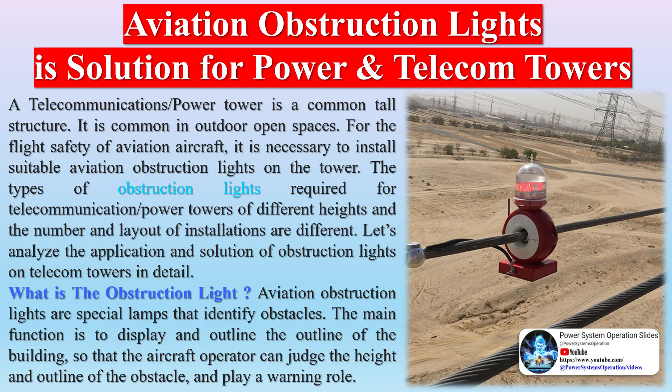Aviation lamps are high-intensity lights used to indicate the height of a building or tower to avoid aircraft collisions during nighttime. They are placed on towers to make their structure more visible. The lights are red or ultraviolet and high-intensity, with an intensity of around 200 to 2,000 candelas — compared to a normal car light of around 25 candelas.